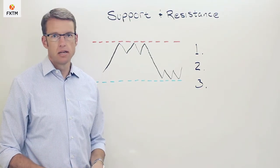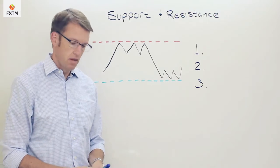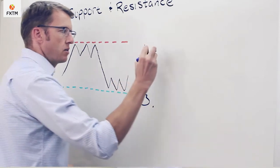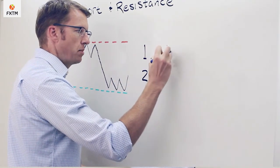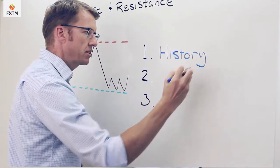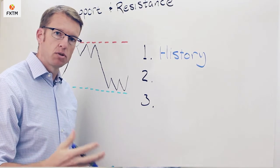Now there are a couple of key concepts about support and resistance that investors should definitely remember. Number one is history, and what we mean by that is how many times has the price gotten to that level and then not been able to either break above or break below.